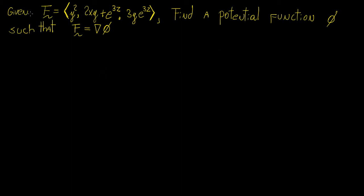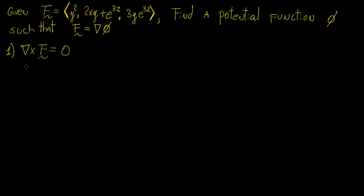The first thing we need to do is show that the vector field is conservative. The only way we can find a potential function phi is by proving that the curl of the vector field f is equal to zero. If this condition is met, the vector field is conservative and we can find phi. If not, we shouldn't waste our time trying.